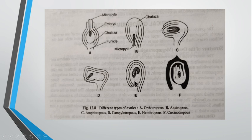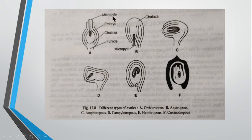The fifth type is hemitropous, also called hemianatropous — there are two terminologies for this kind of structure. Here the nucellus and integuments are more or less at a right angle to the funiculus. When we discuss the structure of the ovule, we reference the chalazal line, micropilar end, and the funicle as axes, along with the position of the embryo.